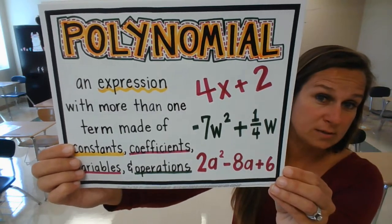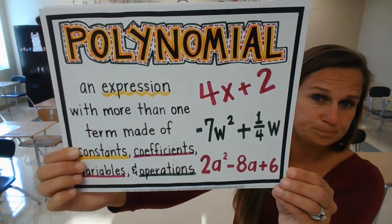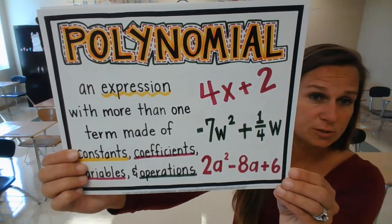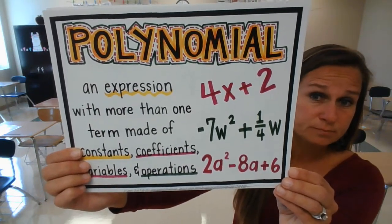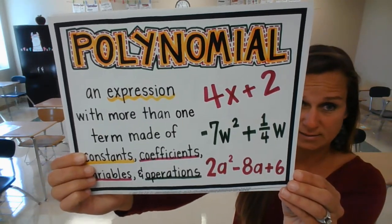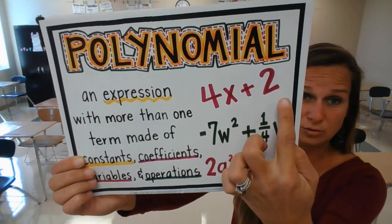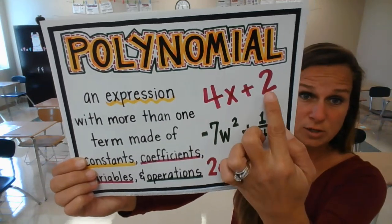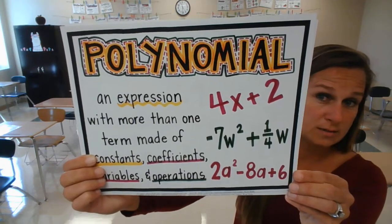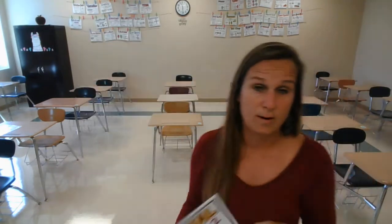We will be dealing with exponents as we are working with polynomials. And remember that each term is divided up by addition or subtraction signs. So if I look at 4x plus 2, 4x is a term and 2 is a term. So a polynomial is an expression with more than one term.